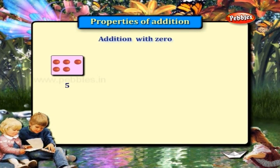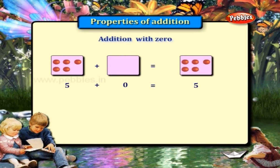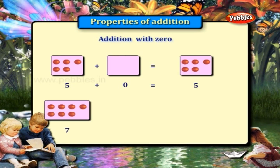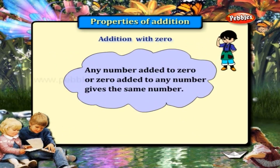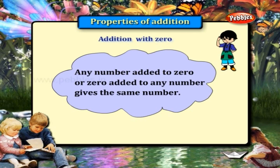Addition with 0. 5 plus 0 is equal to 5. 6 plus 0 gives the same number.